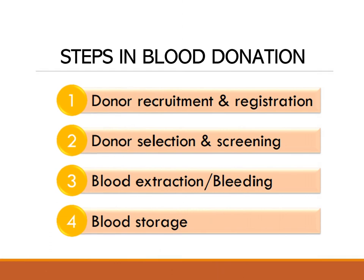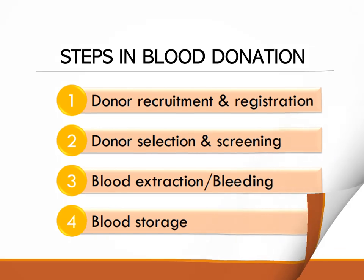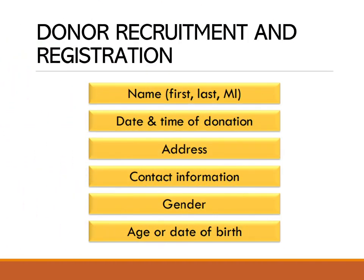Now we go to the different steps in blood donation: donor recruitment and registration, donor selection and screening, blood extraction or bleeding, and blood storage. For donor recruitment and registration, potential donors fill out forms with their name (first, last, middle initial), date and time of donation, address, contact information, gender, and age or date of birth.